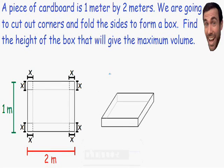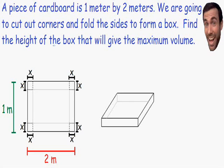Welcome to my video on optimization. In this example we have a piece of cardboard which is 1 meter by 2 meters. We're going to cut out the corners of this piece of cardboard and fold the sides to form a box. The question is: find the height of the box that will give the maximum volume.